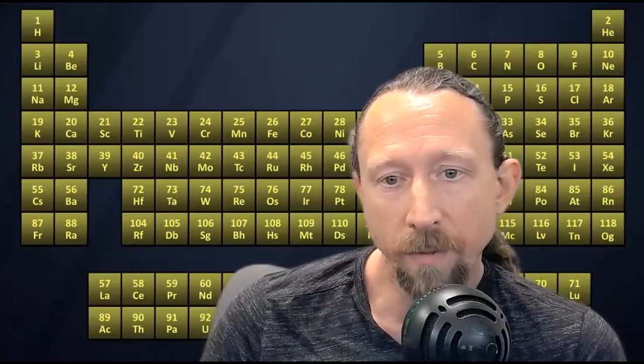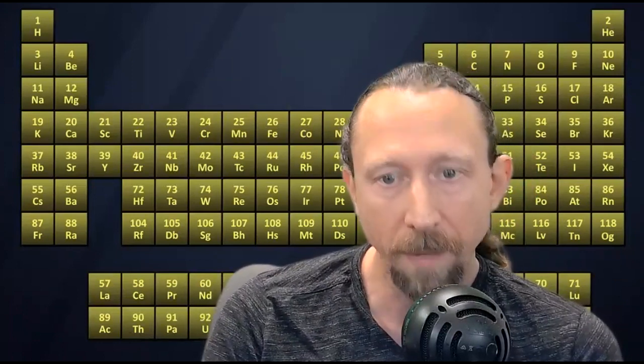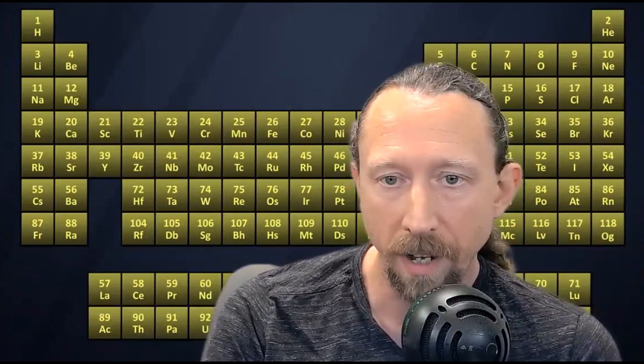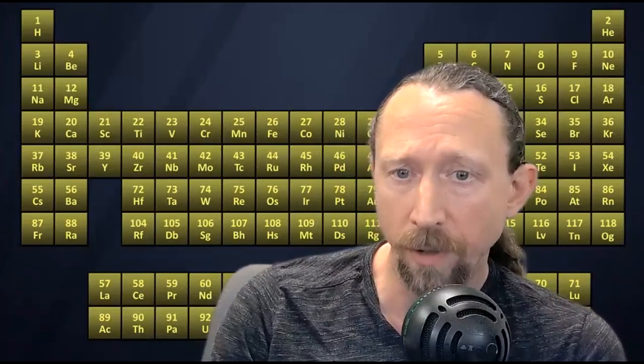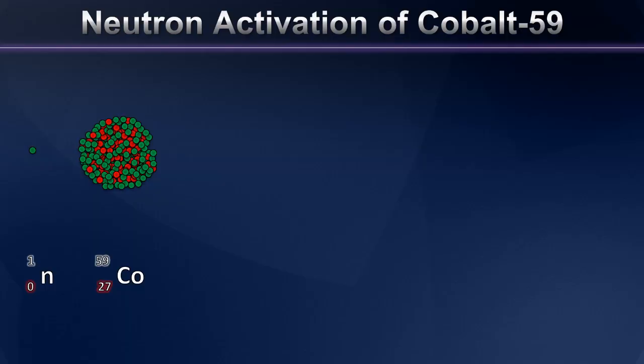And what he suggested was if we use an element like cobalt, deliberately packing cobalt around a very powerful hydrogen bomb, that that cobalt-59, the only naturally occurring isotope of that element, could absorb neutrons to become cobalt-60.